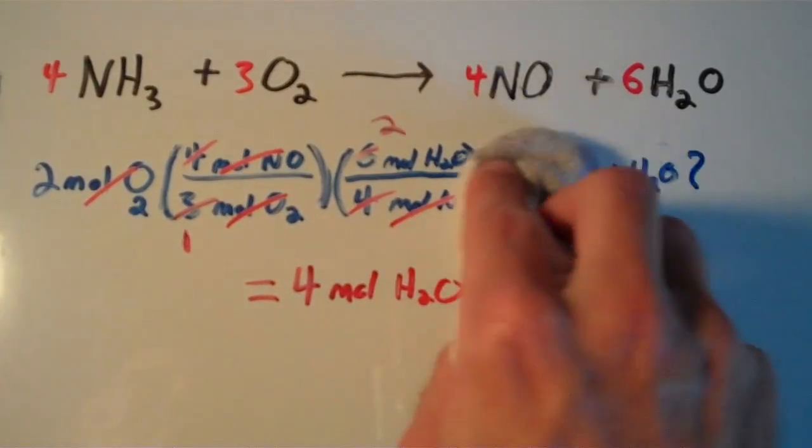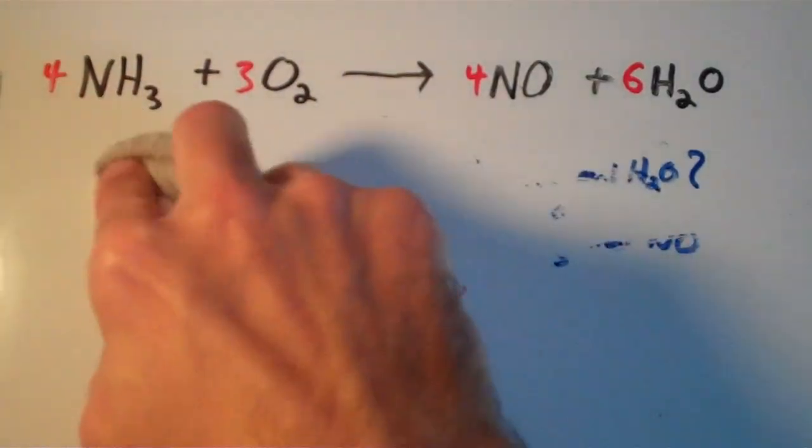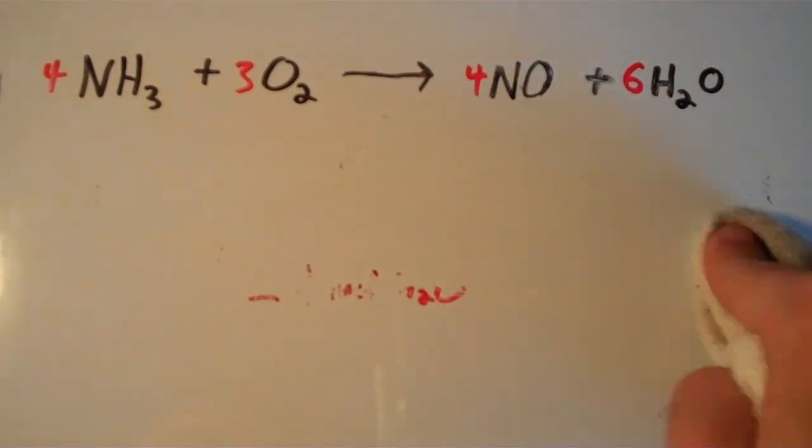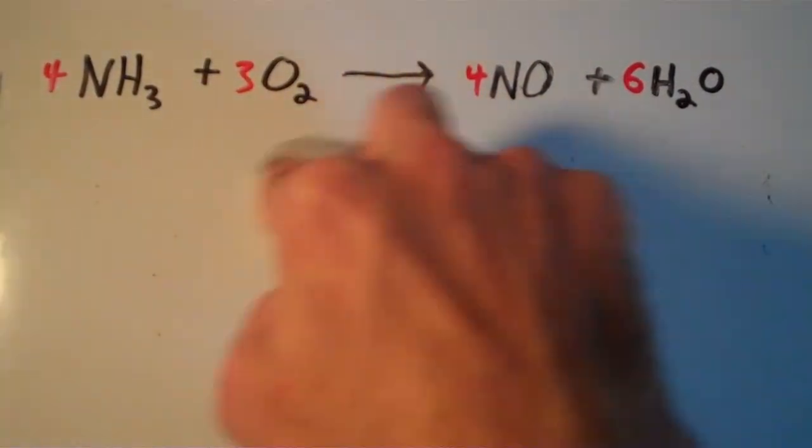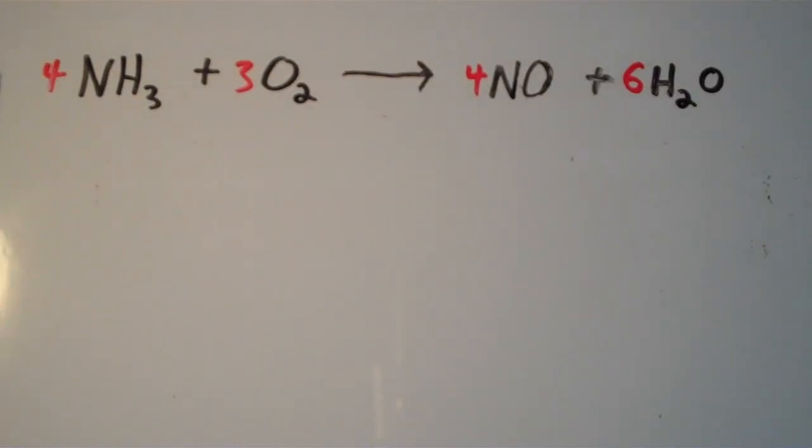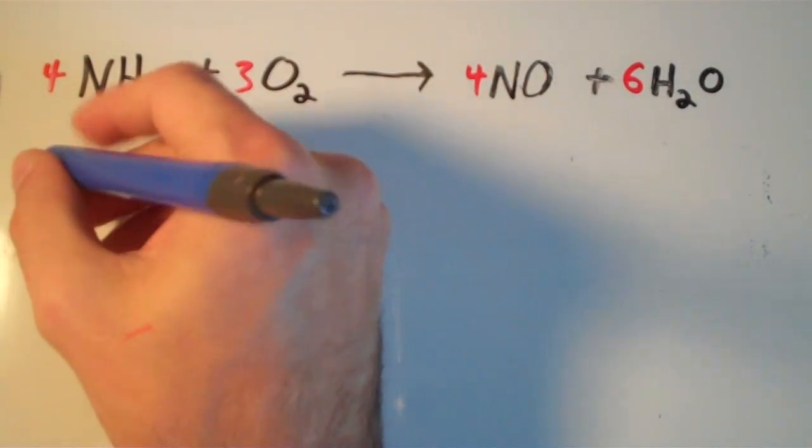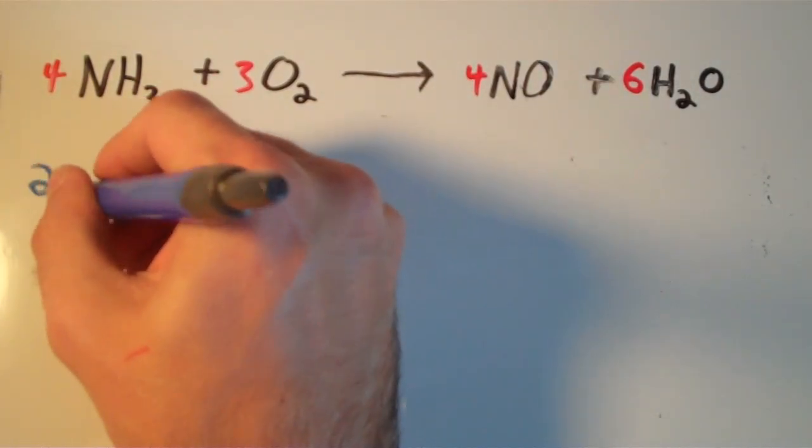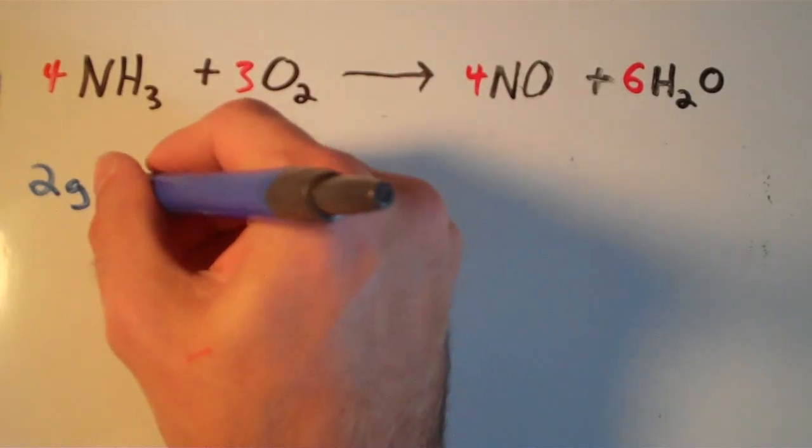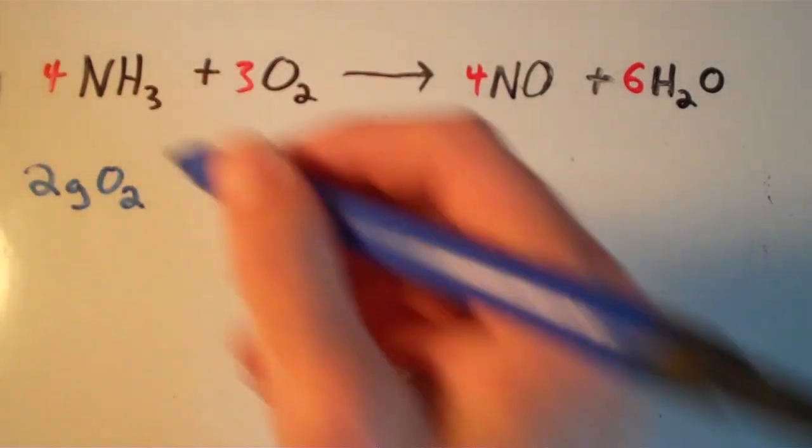Now let's talk about mass to mass conversions and how those are carried out. Suppose instead of 2 moles of oxygen, we now have 2 grams of oxygen. So now we're talking about mass.